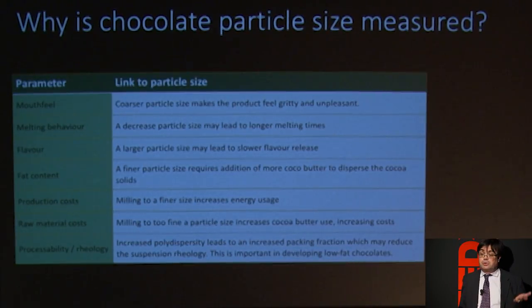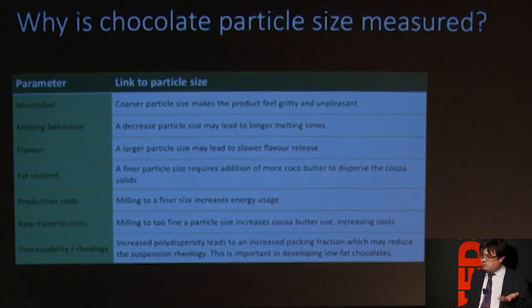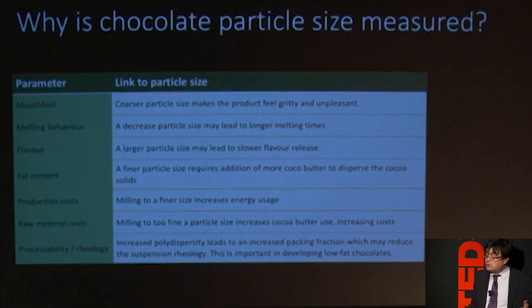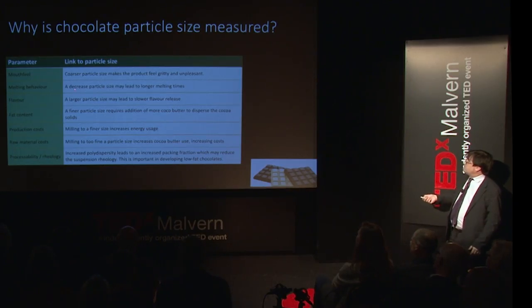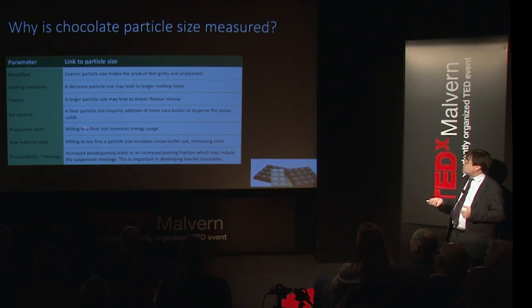For mouthfeel in chocolate, coarse particles make it seem quite gritty and unpleasant. A well-known American brand of chocolate tastes unpleasant to UK palates because it has a much larger particle size, though some parts of the world are used to that. We can detect on the tongue particles of about 30 microns — anything smaller tastes smooth, anything bigger you can start to feel. Small particles can take longer to melt, staying solid in the mouth longer; larger sizes may also cause flavors to come out much more slowly.